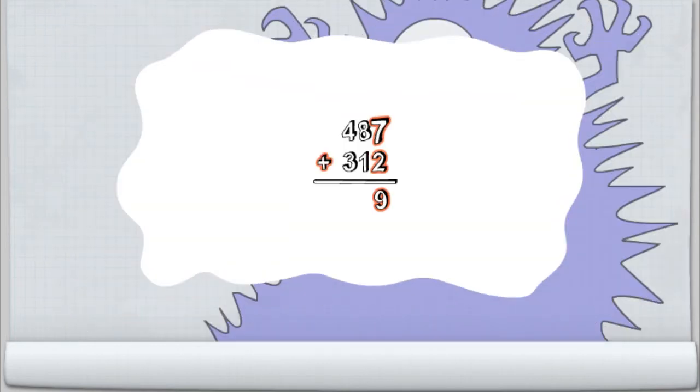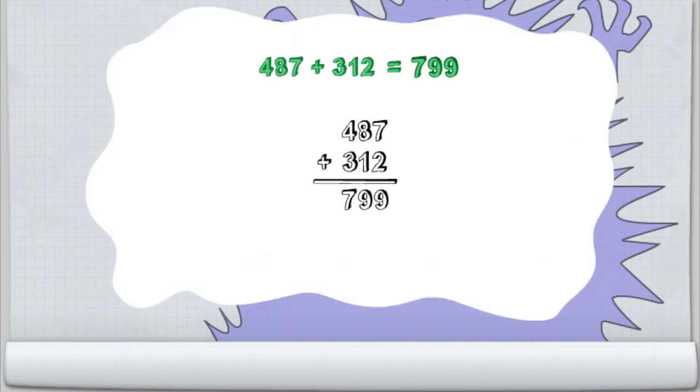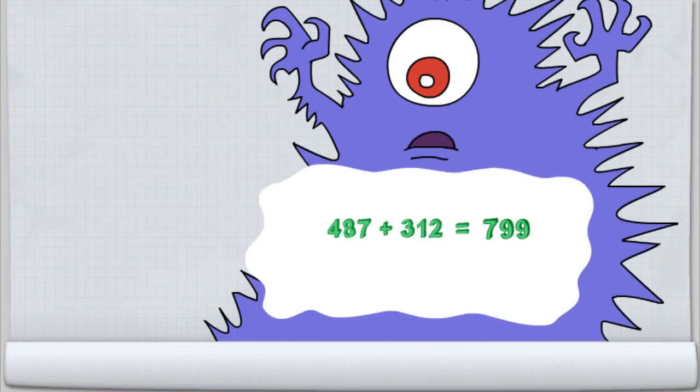7 plus 2 equals 9! 8 tens plus 1 ten equals 9 tens! 4 hundreds plus 3 hundreds equals 7 hundreds! Altering these awful addends to an ambrosial 799!